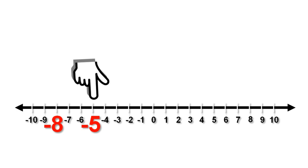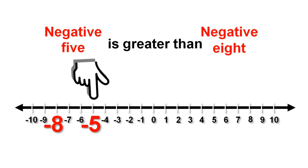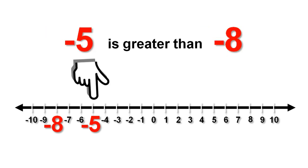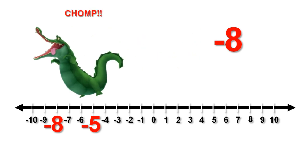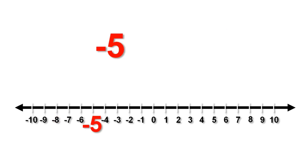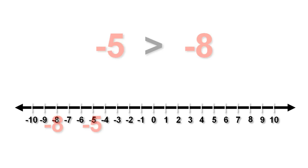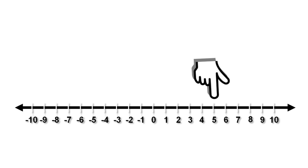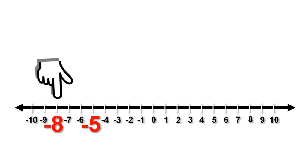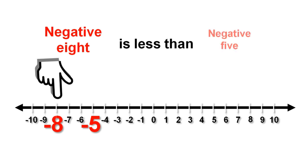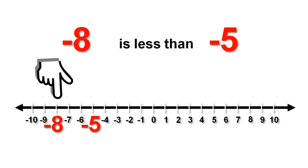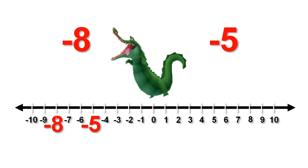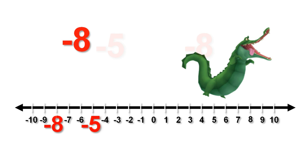Negative 5 is further to the right than negative 8, so we can say that negative 5 is greater than negative 8. Negative 8 is further to the left on the number line than negative 5, so we can say that negative 8 is less than negative 5. The greedy crocodile still wants to eat the bigger number, so we can write this out like this.